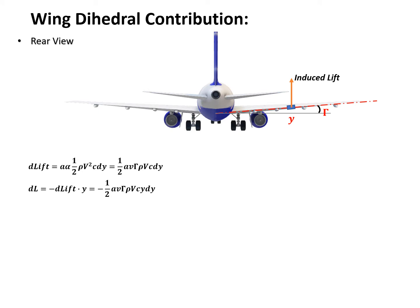The incremental rolling moment dL equals minus d_lift times y, where y is the moment arm because that incremental section is located at y. The reason for the negative sign: using the right-hand rule, the moment contributed from that induced lift is actually pointing to the rear of the aircraft, so it's a negative moment. We plug in d_lift and obtain this relation. To get the total rolling moment, we integrate from negative b/2 to positive b/2.